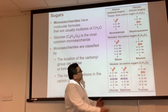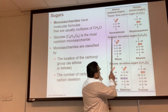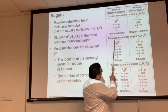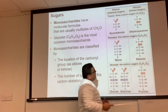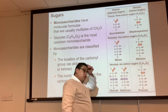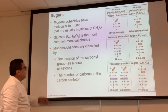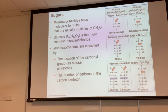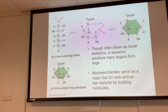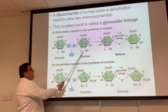A pentose would be a five-carbon sugar, and a triose is a three-carbon sugar. Those are your varieties of monosaccharides, and there are other ones not just those.